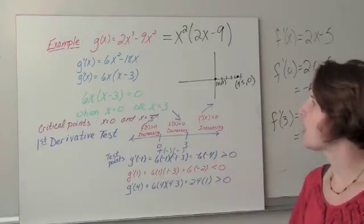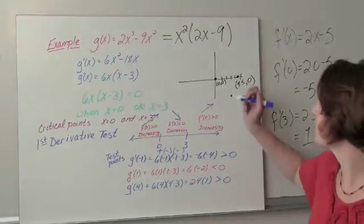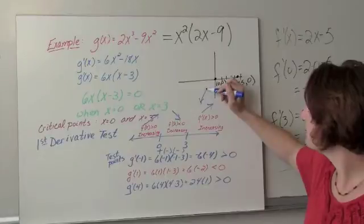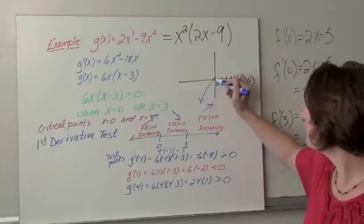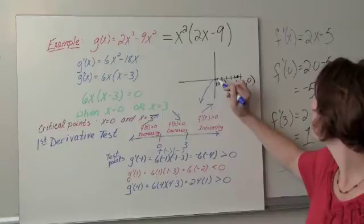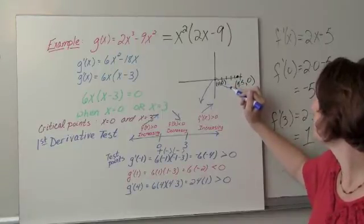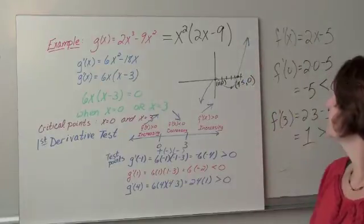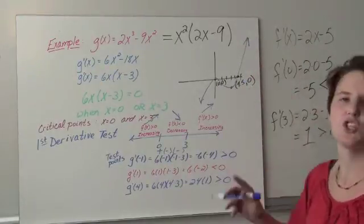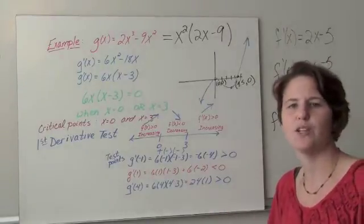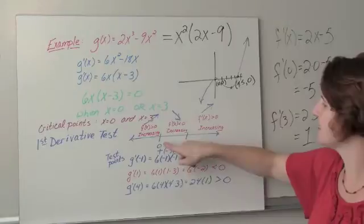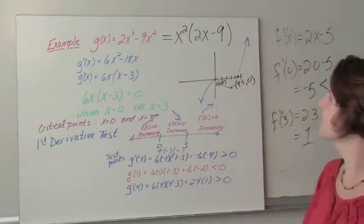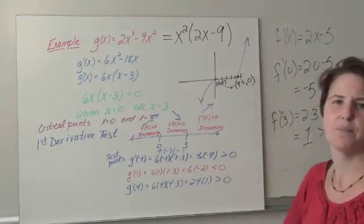If I wanted to draw a picture of what this is going to look like, I know that it's going to be increasing up until I reach 0, then decreasing until I reach 3, which I don't know exactly where that is, but it's somewhere down here. And then we're going to increase after we reach 3. And so this is a general sketch of what the graph would look like. I know that it needs to be increasing until I reach 0, decreasing until I reach 3, and then increasing. And I have to pass through those points.